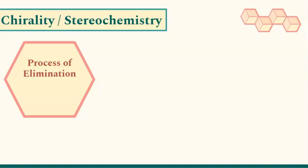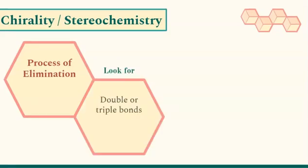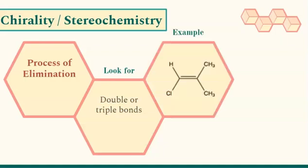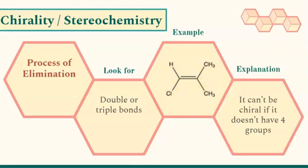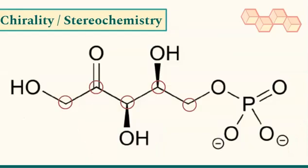I'm going to use the process of elimination. The first thing I'm going to do is look for double or triple bonds. For example, I have two carbons both attached to a double bond, so I can eliminate both of those carbons — they cannot be chiral centers because they don't have four groups. This carbon just has a hydrogen, a chlorine, and one other group, so it only has three groups. Looking back at the molecule I'm analyzing, I can eliminate the carbon attached to a double bond.